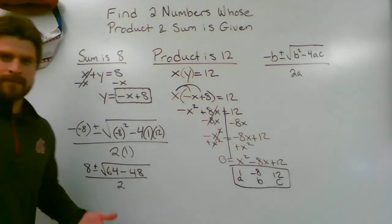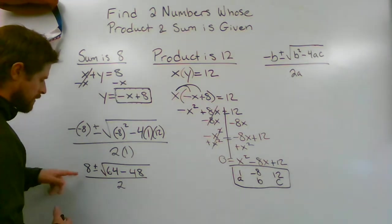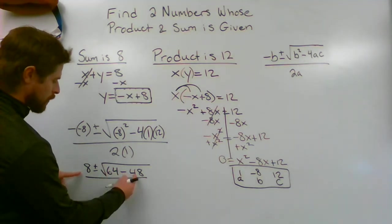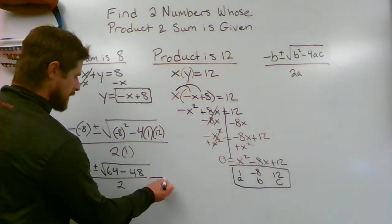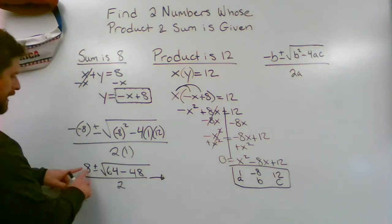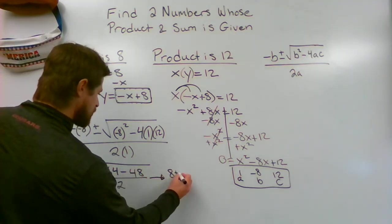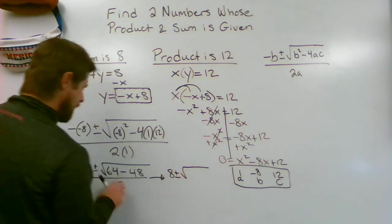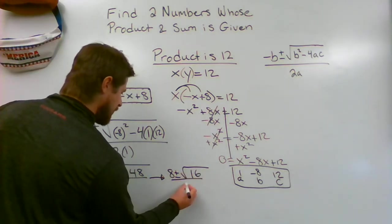I'm almost done, stick with me. I know it's been a little bit of a travel to get to the end here, but we're almost done. 64 minus 48, we're going to subtract those two numbers. Let's just move over to the right so we don't run out of room. Let's write everything down as we see it, but let's just simplify inside the square root. 8 plus or minus the square root of 64 minus 48 is 16, divided by 2. Square root of 16 is just a 4.